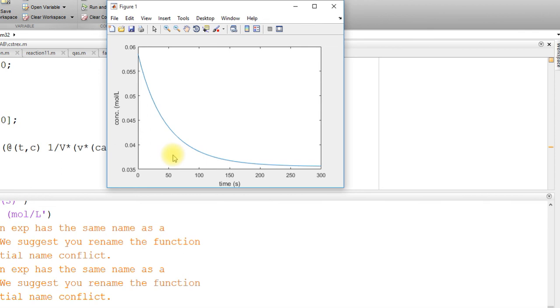Decreasing the flow rate will increase the residence time, that will increase the conversion of A concentration of reactant and that's why concentration will decrease and reach the new steady state. So this is the new steady state you got it.